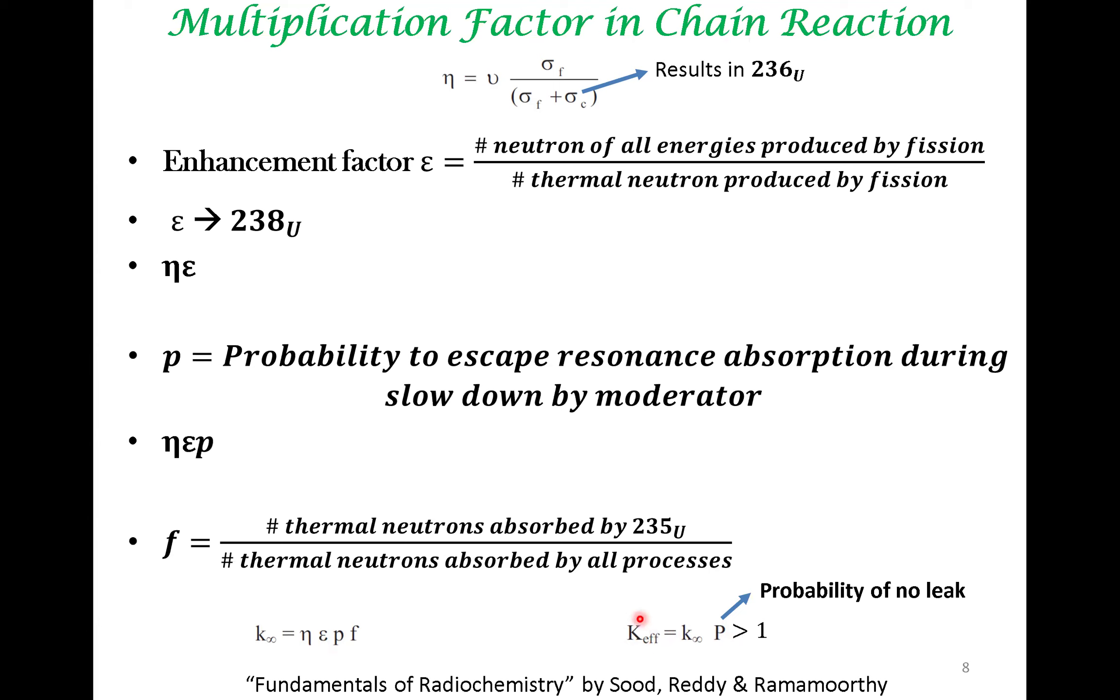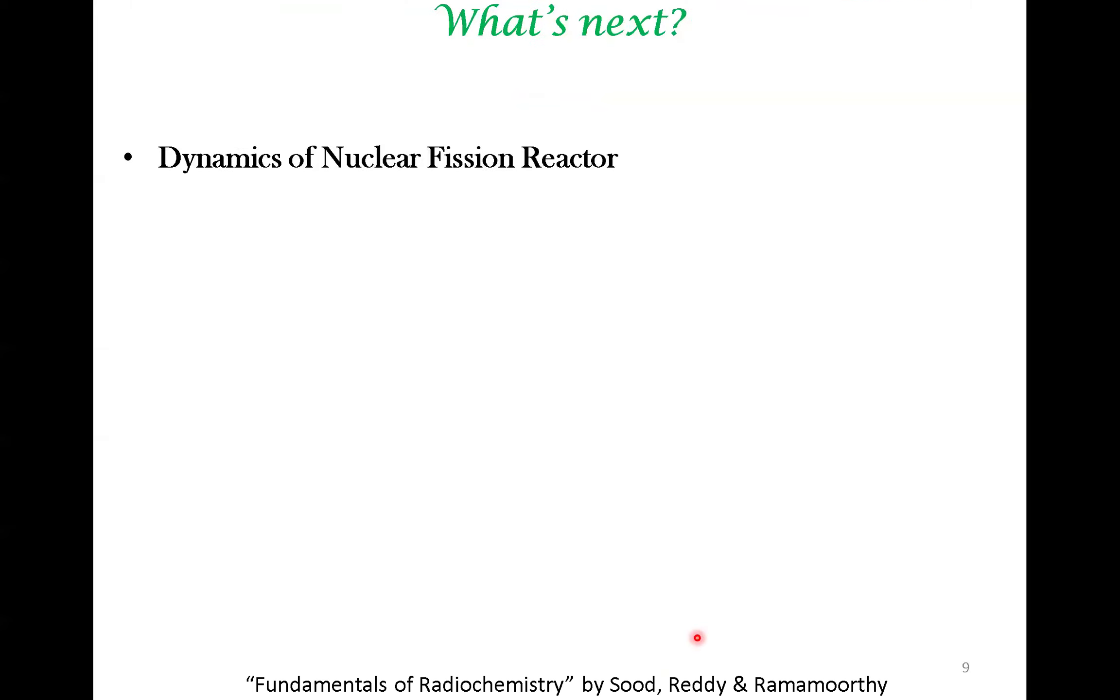To sustain a chain reaction, you want this number to be greater than 1 because if it is less than 1, you are consuming more neutron than what you are generating. Therefore, you cannot sustain a chain reaction. This is a very important factor that has to be modulated to control the rate of the reaction in a nuclear fission reactor.